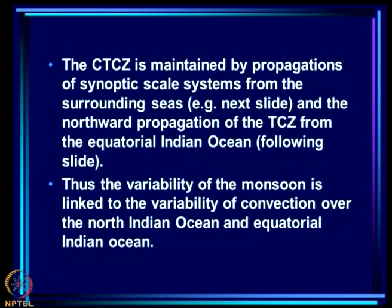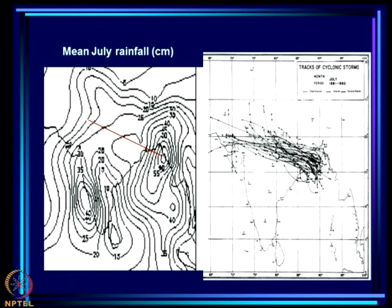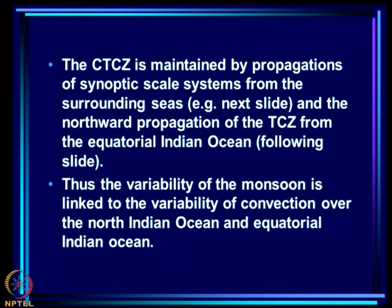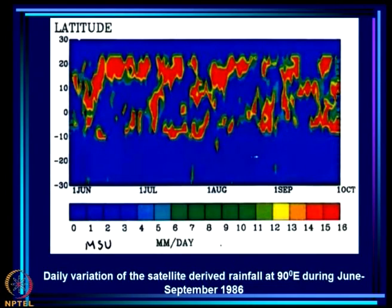The CTCZ itself is maintained by propagation of synoptic scale systems from the surrounding seas. What you see here are tracks of tropical storms in July — all of them travel from the head of the Bay across the monsoon zone, and you can see that the tracks and the rainfall are related. The CTCZ is maintained by propagation of synoptic scale systems from the surrounding seas, such as those shown, and northward propagation of the TCZ from the equatorial Indian Ocean.